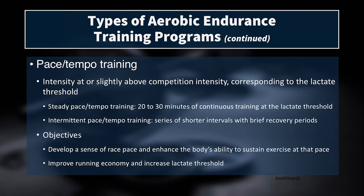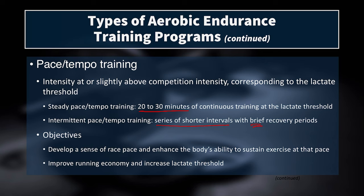Traditionally, this is steady running for 20 to 30 minutes continuously at the lactate threshold. You can also do intermittent tempo training — a series of shorter intervals with brief recovery periods. The emphasis is on brief recovery, just enough to bring lactate back down. Objectives include developing race pace feel, enhancing the ability to sustain fast paces, improving running economy, and improving your lactate threshold.